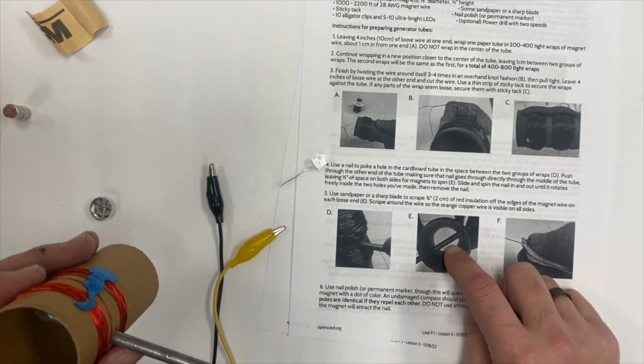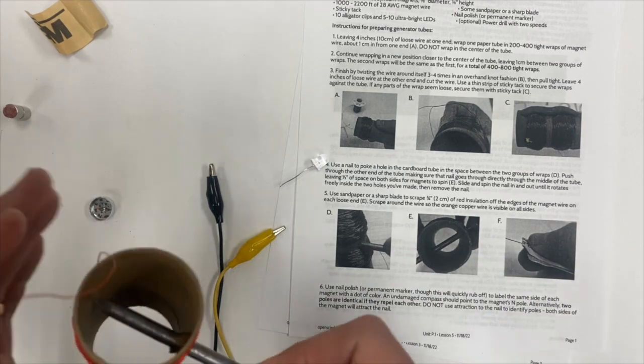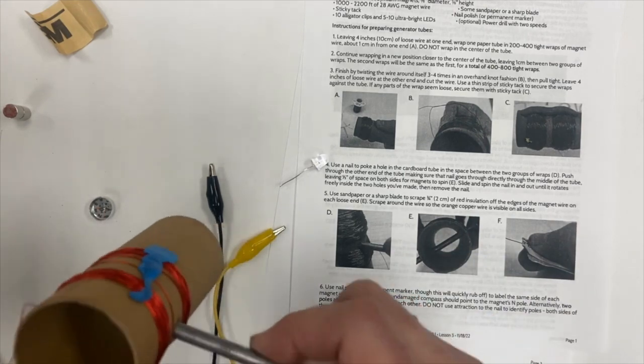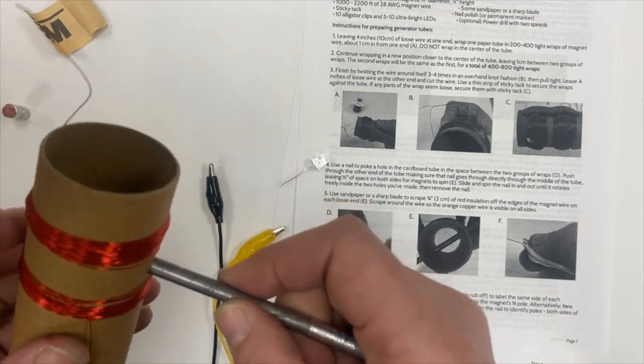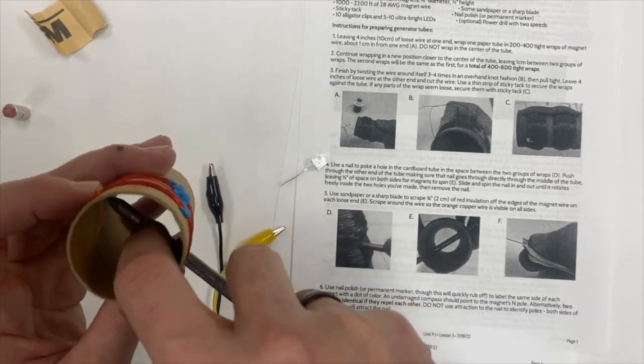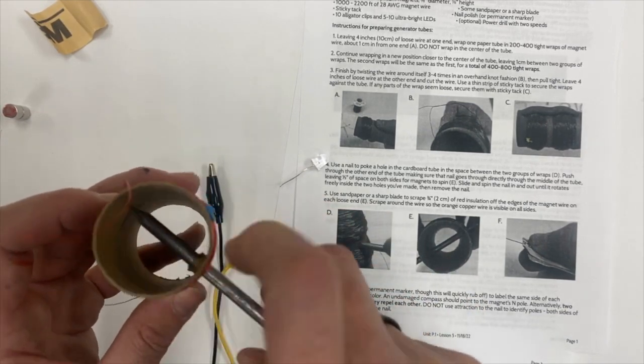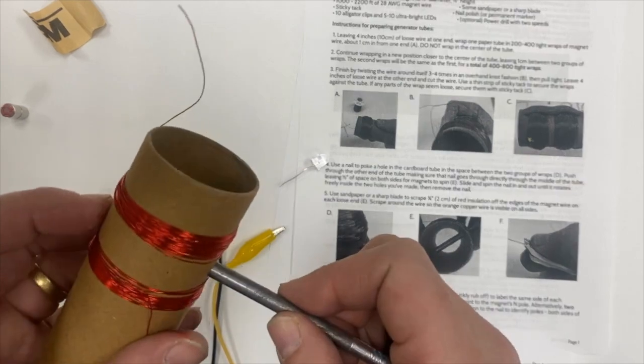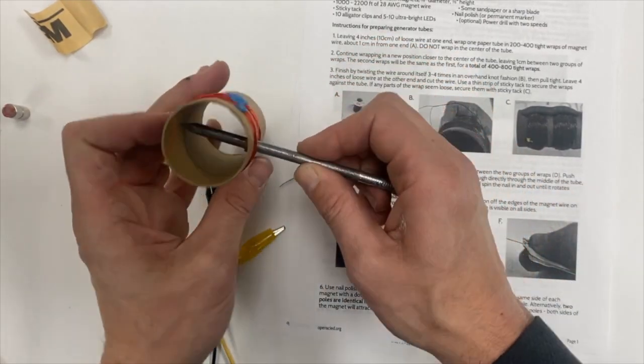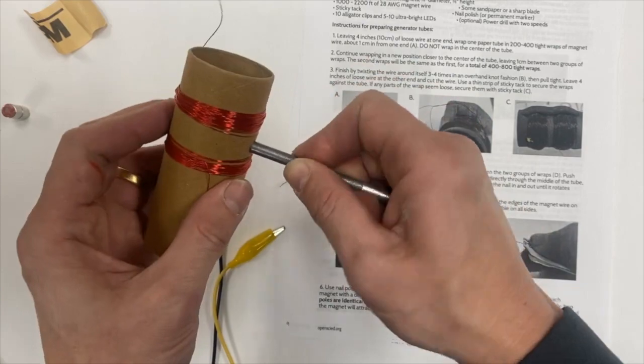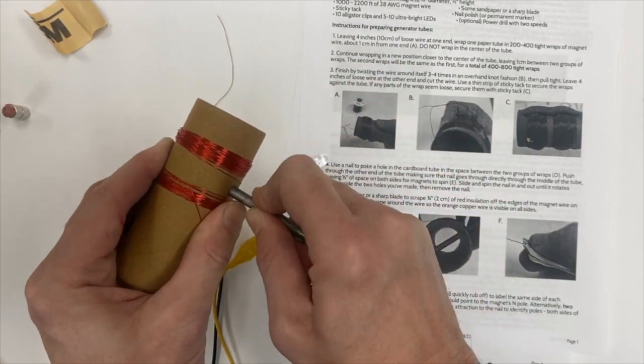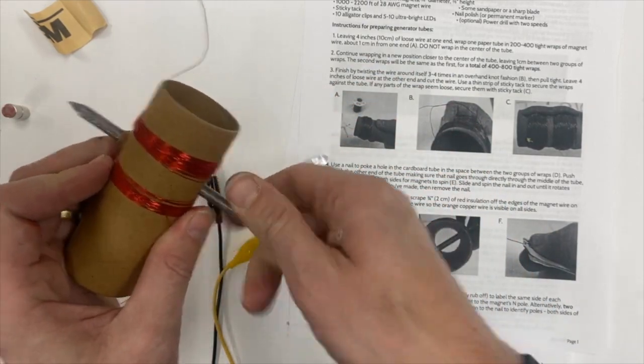And then you really want to make sure that the nail is close enough to the center of the tube that the magnets are able to connect directly to the nail, so the magnets that students attach to the nail later won't bump up against the side. So I'm trying to keep it level this way and centered this way, and then I'm just going to poke it through, twist it a little bit to make it work.